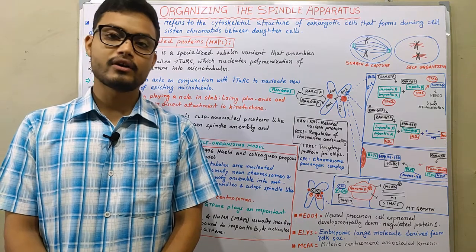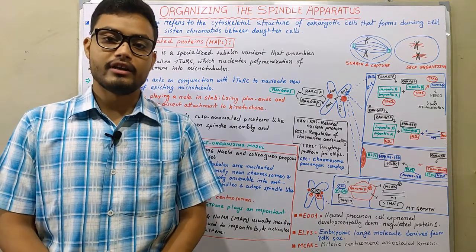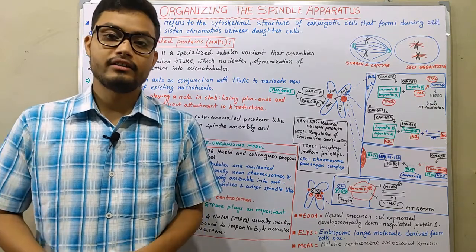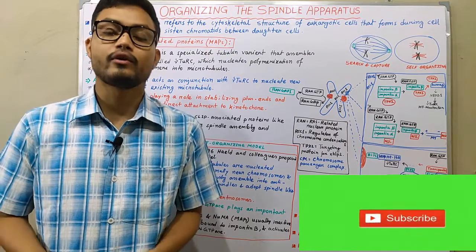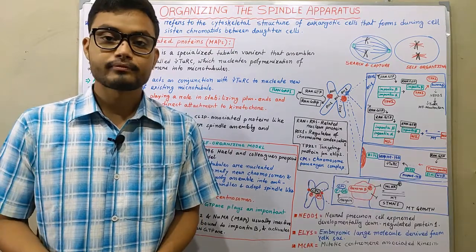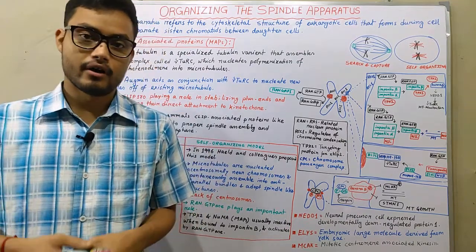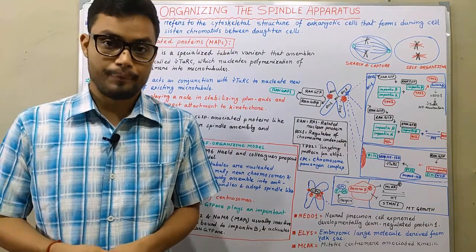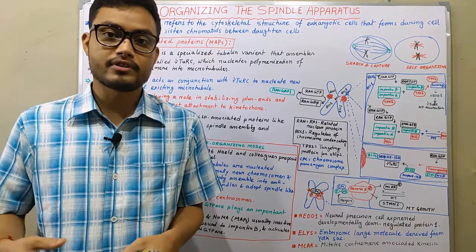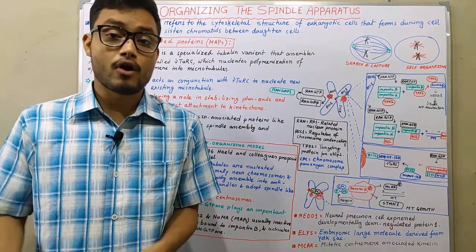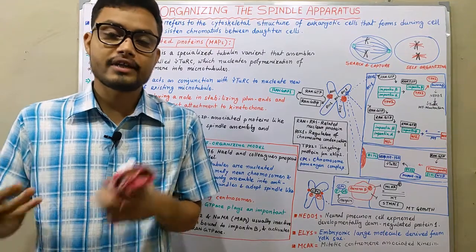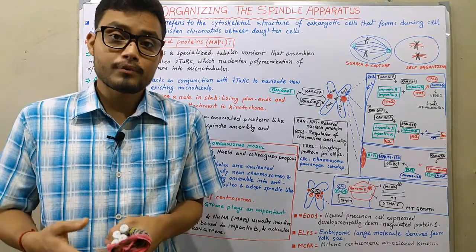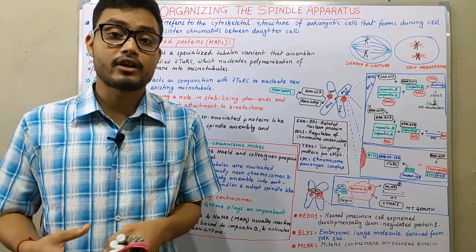Spindle apparatus is a particular structure that is essential for each and every cell which undergoes division. In case of a dividing cell, spindle apparatus helps to segregate the chromosomes into the daughter cells. Spindle apparatus appears in both cells which have centrosomes and which lack centrosomes. In cells which have centrosomes, spindle apparatus originates from the centrosomes. But in cells which lack centrosomes, those cells need many more proteins which make a particular functional spindle apparatus.